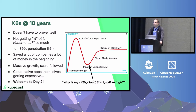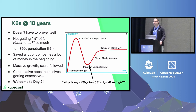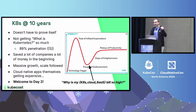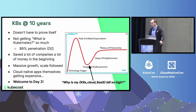But then what happened? We took the savings and we grew, as an industry and as individual companies. 10 years ago we could never imagine the things we're doing here. So all of a sudden, we find our apps are getting expensive once more. This is the Gartner hype cycle — are we in the trough of disillusionment? I just summarize it as: welcome to day two. We are firmly in day two, and we have people asking what can we do about that.